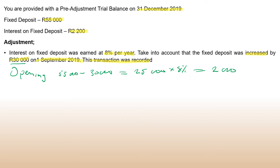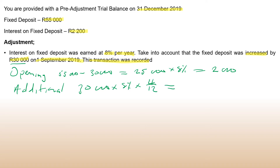Now for the additional amount: this 30,000 additional deposit — that will be 30,000 times eight percent, from 1 September 2019 to 31 December 2019. That is four months — September, October, November, December — so times four over twelve, which gives you 30,000 times eight percent times four divided by twelve, which equals 800.